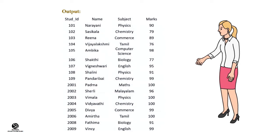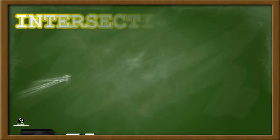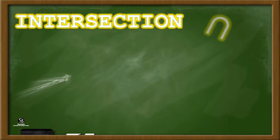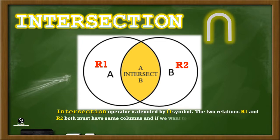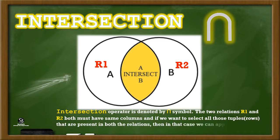It also eliminates duplicate tuples. Intersection. The Intersection operator is denoted by the intersection symbol. The two relations R1 and R2 both must have the same columns. If you want to select all tuples that are present in both relations, then we can apply the intersection operation on these two relations.